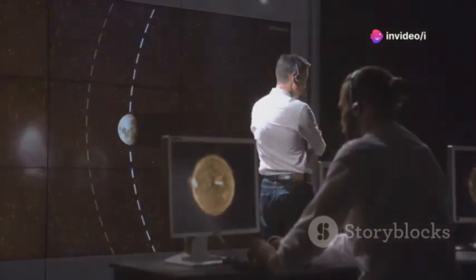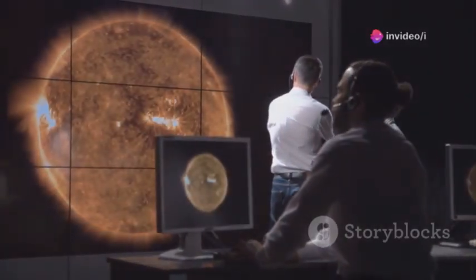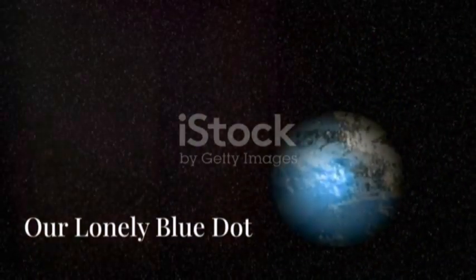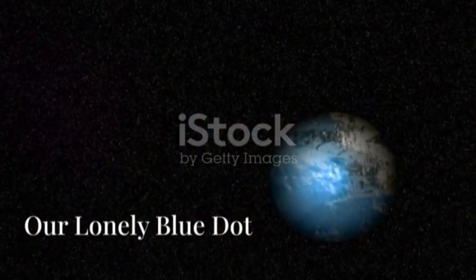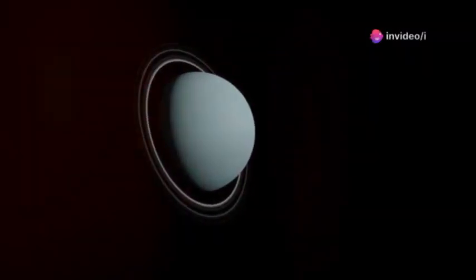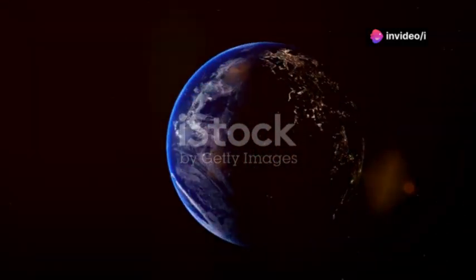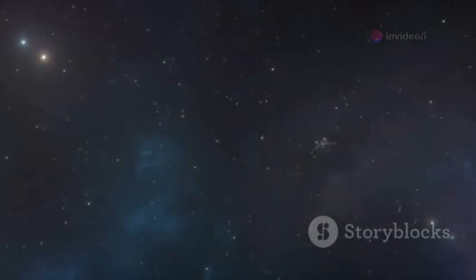The number of truly habitable planets may be far smaller than we thought. Voyager's last data changes how we search for life and how we value our own world. In 1990, Voyager 1 captured the Pale Blue Dot—a single pixel, our home floating in a sunbeam. It was a humbling image, a reminder of our planet's fragility.